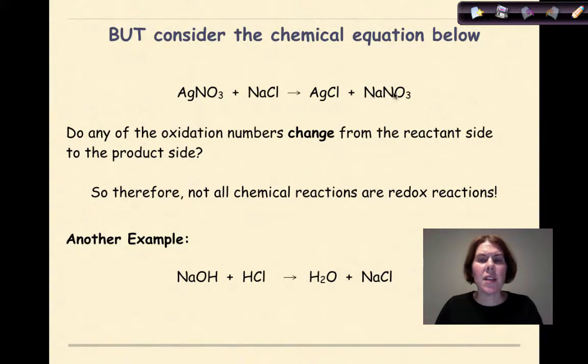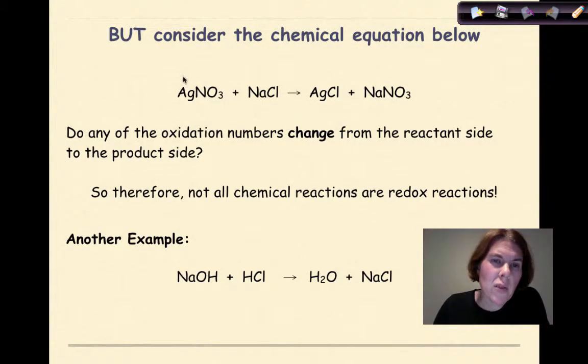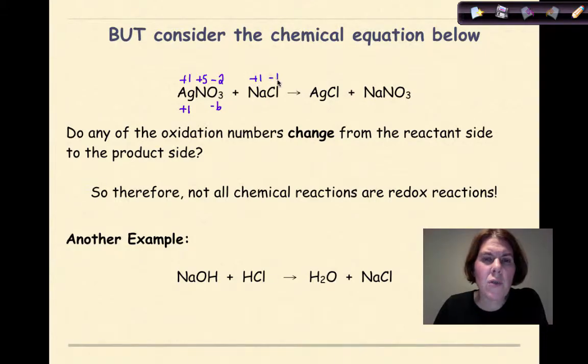Now let's look at this chemical equation right here and assign oxidation numbers to all the elements. So I know that silver is going to be plus one. Oxygen is going to be minus two. Minus two times three gives me negative six. I'm going to bring down the plus one. Therefore, the nitrogen has to be plus five. I go to sodium and chlorine. Sodium is plus one. Chlorine is minus one.